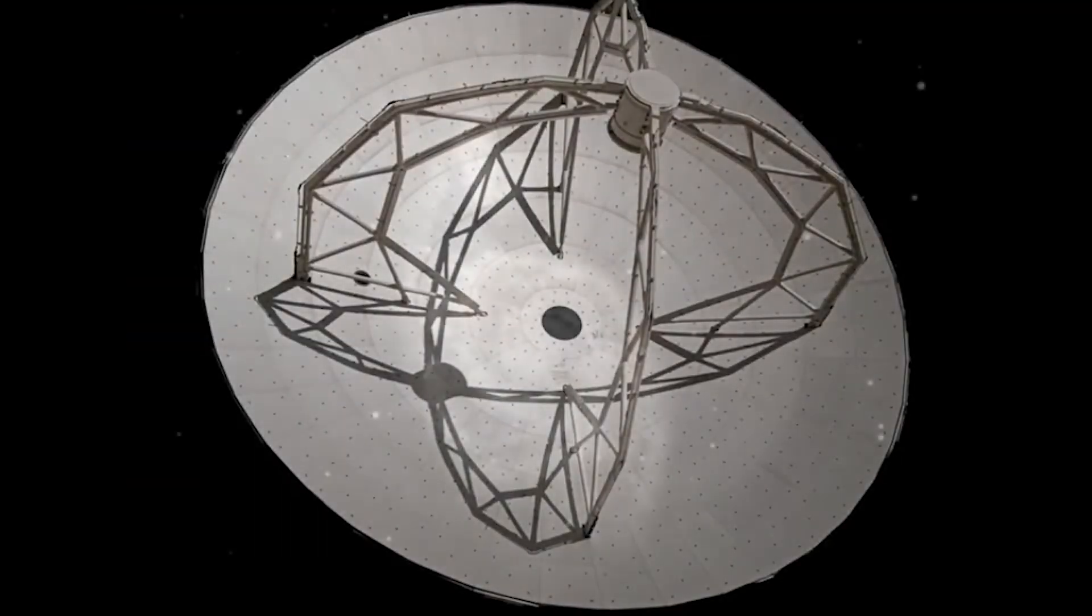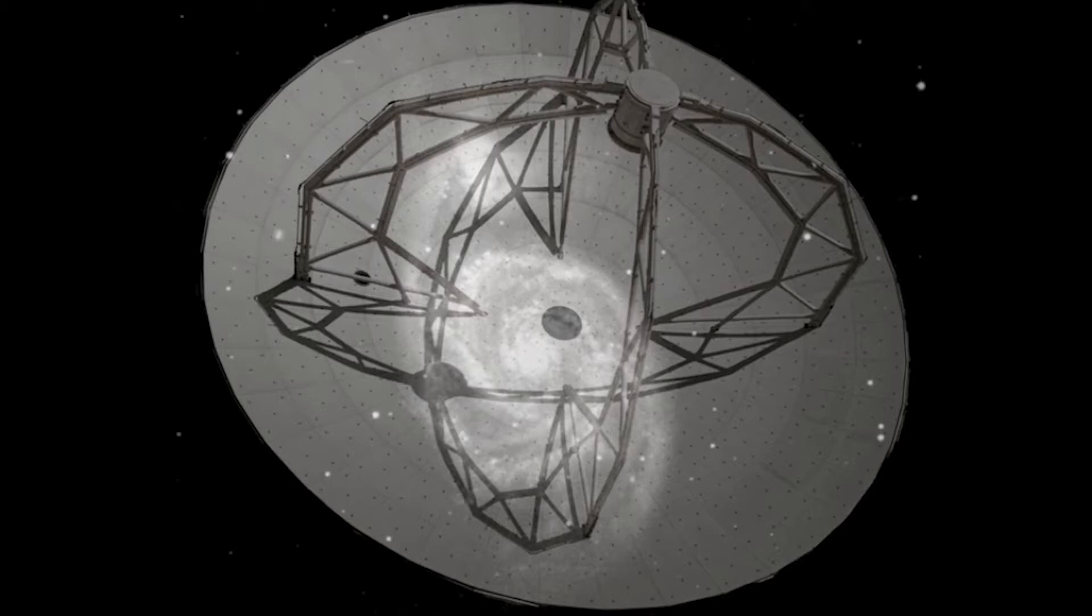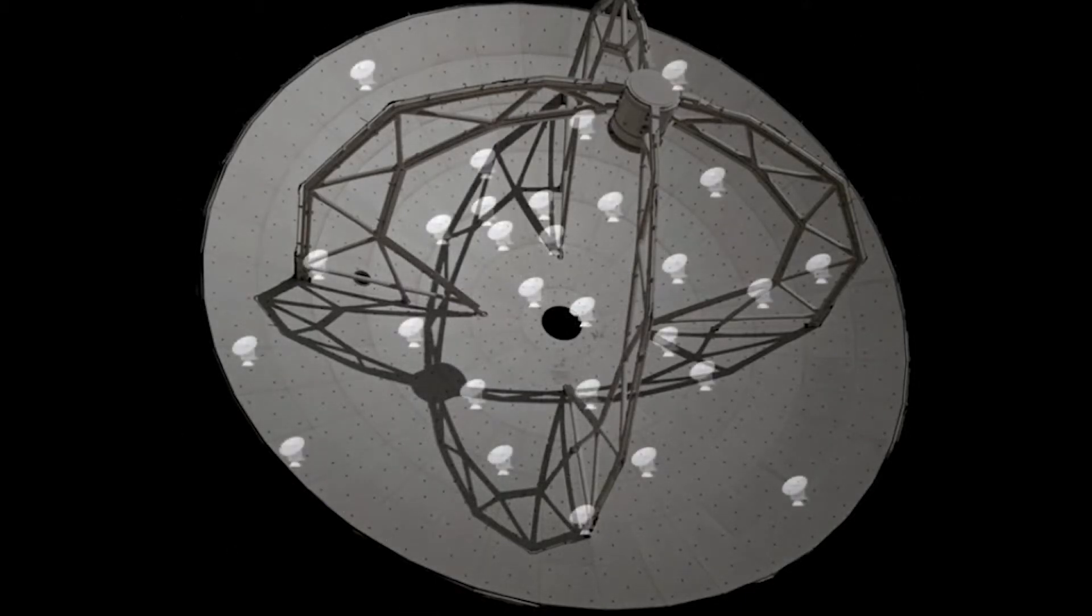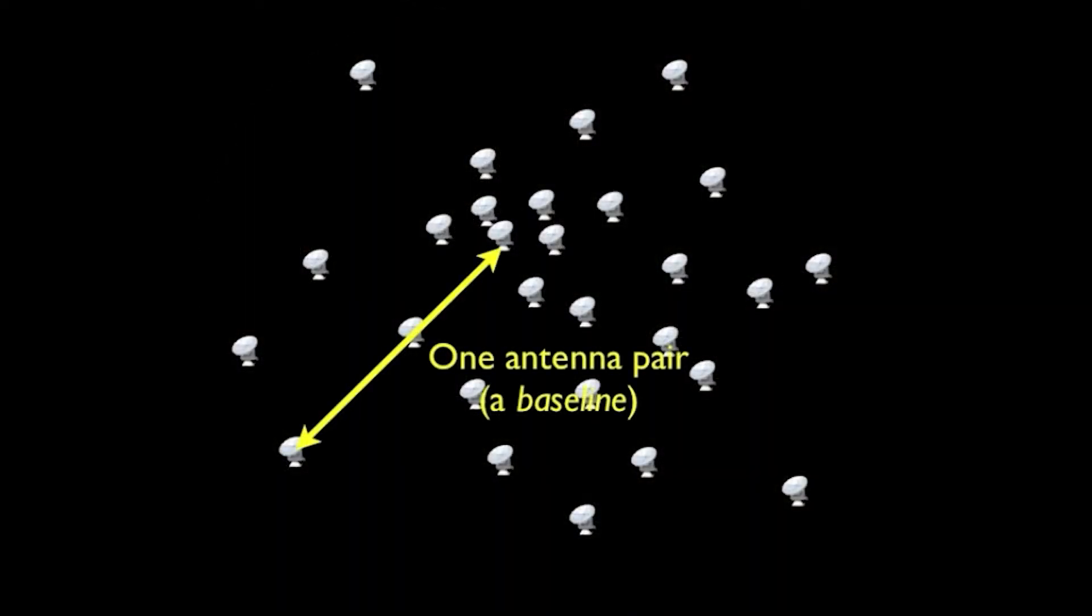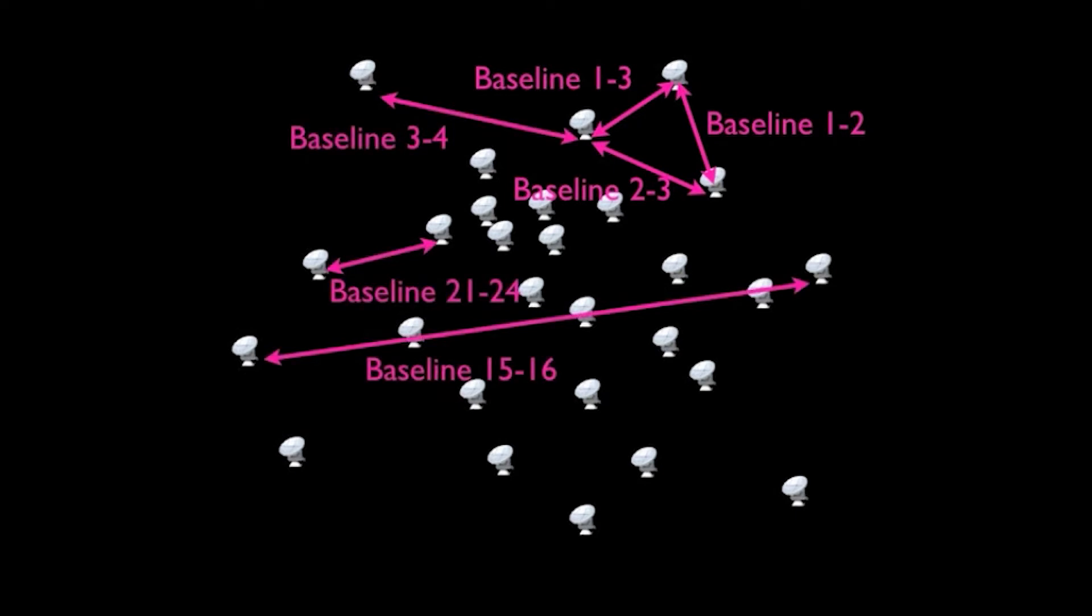Unlike a large single mirror, where all size scales are sampled on the sky down to the angular resolution of the mirror, an interferometer can only sample structure on the sky determined by the projected distances between pairs of antennas. These antenna pairs are called baselines.